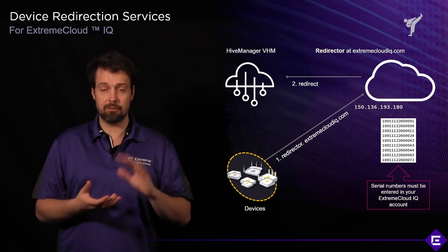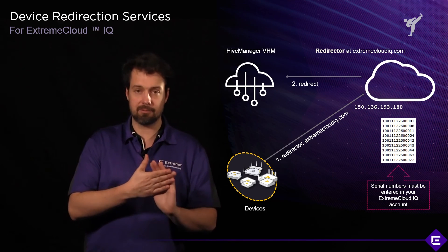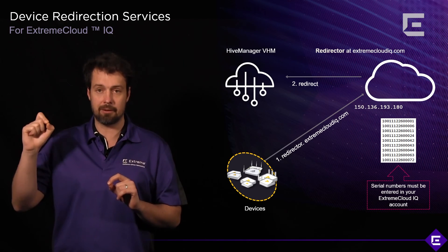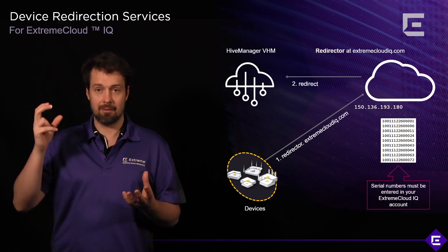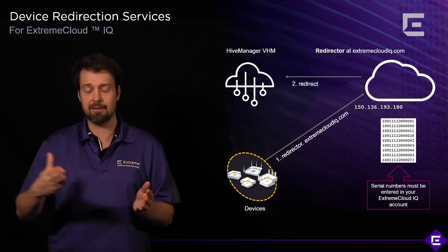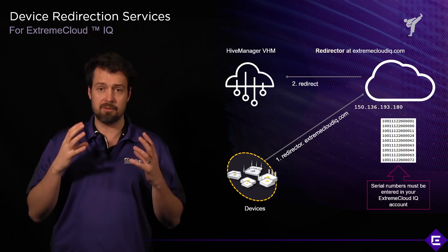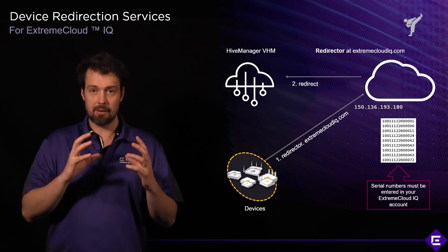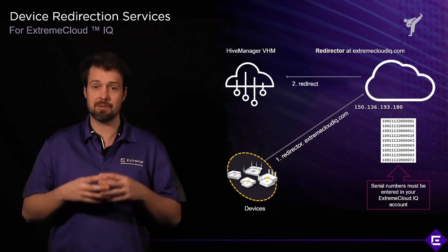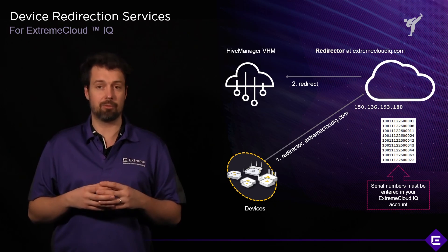It all happens out of the box. All devices come preconfigured with that mechanism. When you plug them in, as long as they get an IP address, a default gateway, and a DNS server, they will try to contact redirector.extremecloudiq.com. It's up to you to enter the serial numbers of those APs into your Extreme Cloud IQ account. The redirector will then show the access points where to go — your closest RDC — and within that RDC, the access points will attach themselves to the virtual IQ instance. That is how you get access points onboarded onto the Extreme Cloud IQ platform so you can configure and provision them going forward.